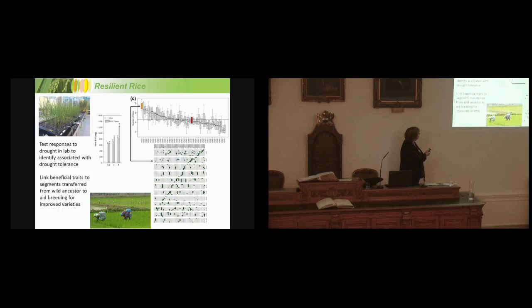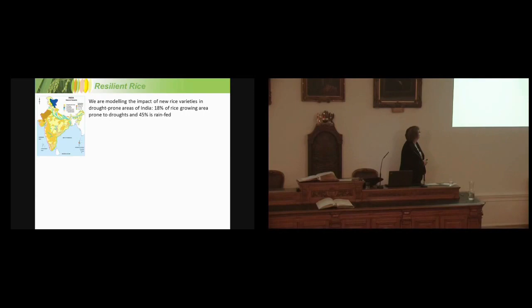The idea is to identify these traits in the lab and in the field, link these beneficial traits to particular segments of the genome that we've transferred. We're quite lucky because the rice genome has been sequenced, there's a lot of genetic data. So we know what some of these segments do. And then we've got markers that tell us when we've been able to cross those segments into elite cultivars for improved varieties, which we can then try in the field. So we've done this bit and we've done most of this bit and we're now hoping to start this bit. We've got another two years to go, so it's kind of early days, but we're making some progress.